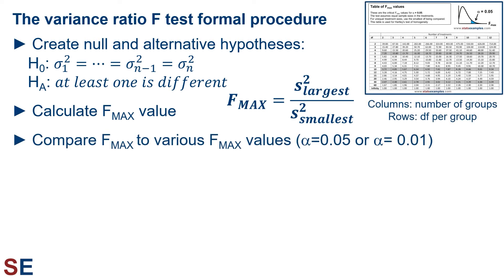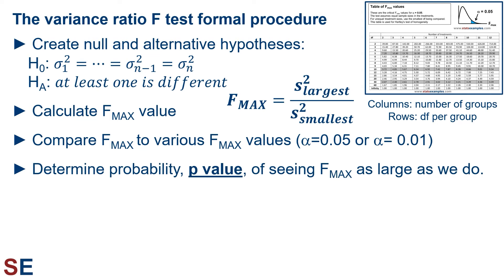We then compare our F-max calculated value to the F-max critical values from the F-max distribution. There's a different F-max distribution for each combination of the number of groups and the degrees of freedom within each group. In the F-max table, the columns indicate the number of groups and each row corresponds to the degrees of freedom for each group. Our p-value is the area to the right of our calculated value. The values within the table are critical values corresponding to an alpha of 0.05, showing how far on the x-axis we need to go so that 5% of the area under the F-max curve is to the right. By looking at tables for different alpha values, we can determine the minimum alpha at which we would still reject the null hypothesis — this minimum alpha is our p-value, the exact probability of getting an F-max value as large as we do if the null hypothesis of equal population variances is true.